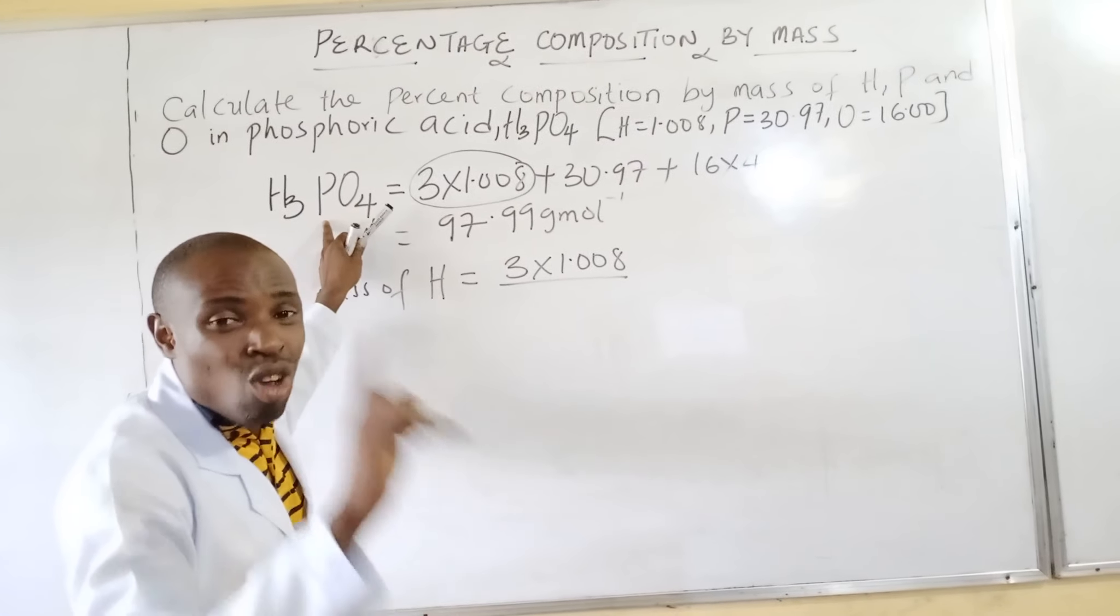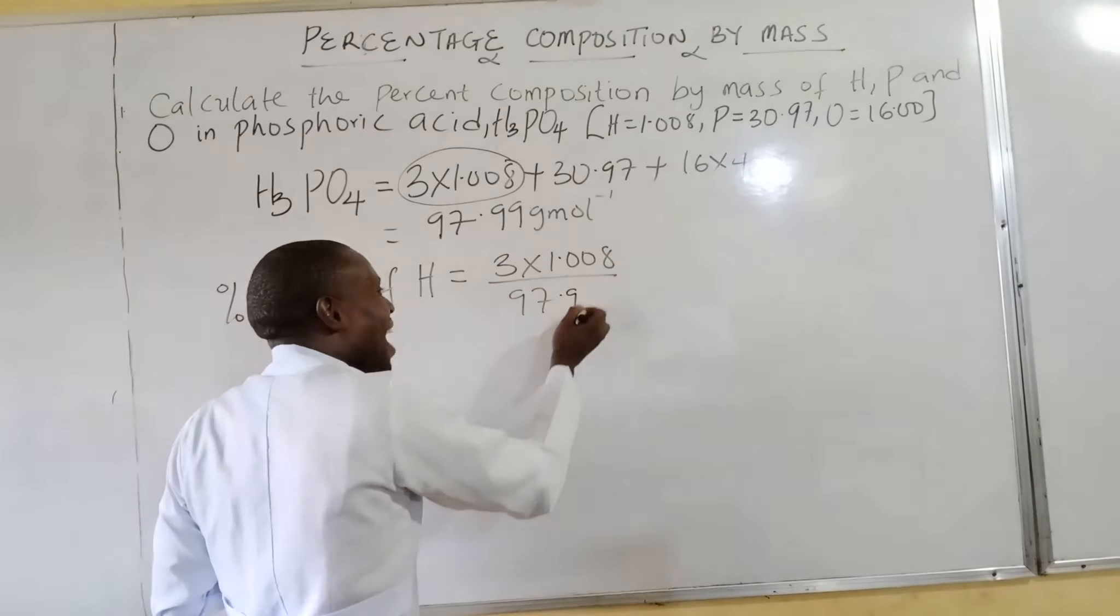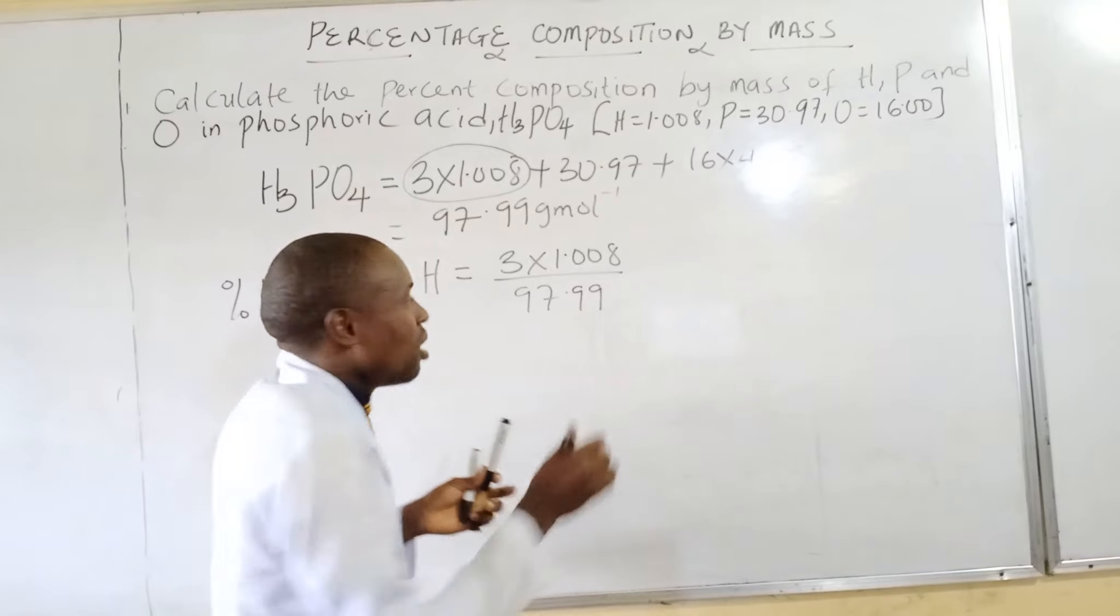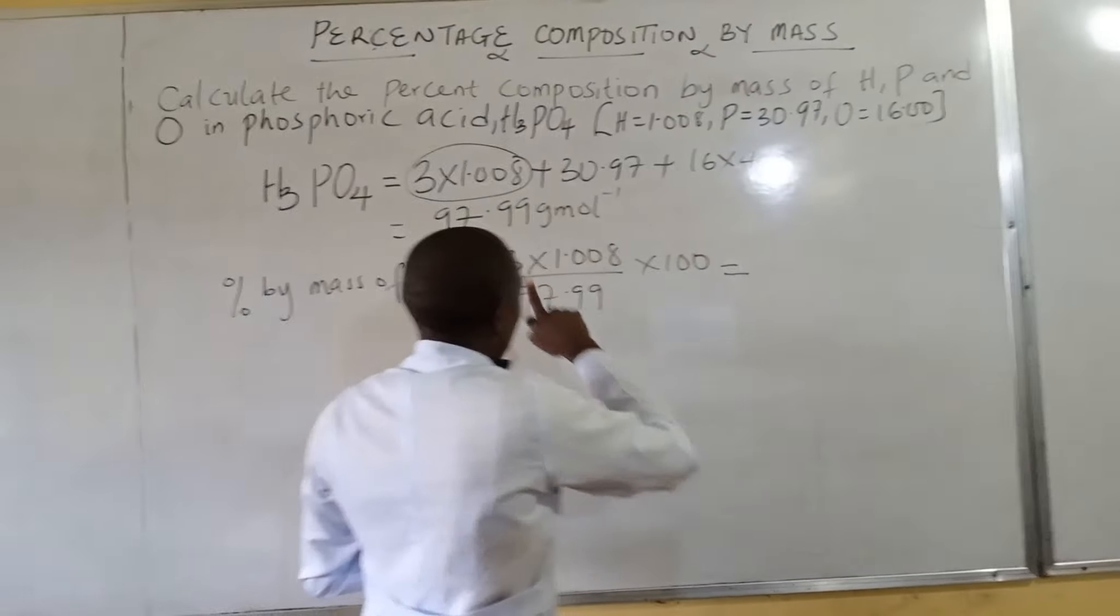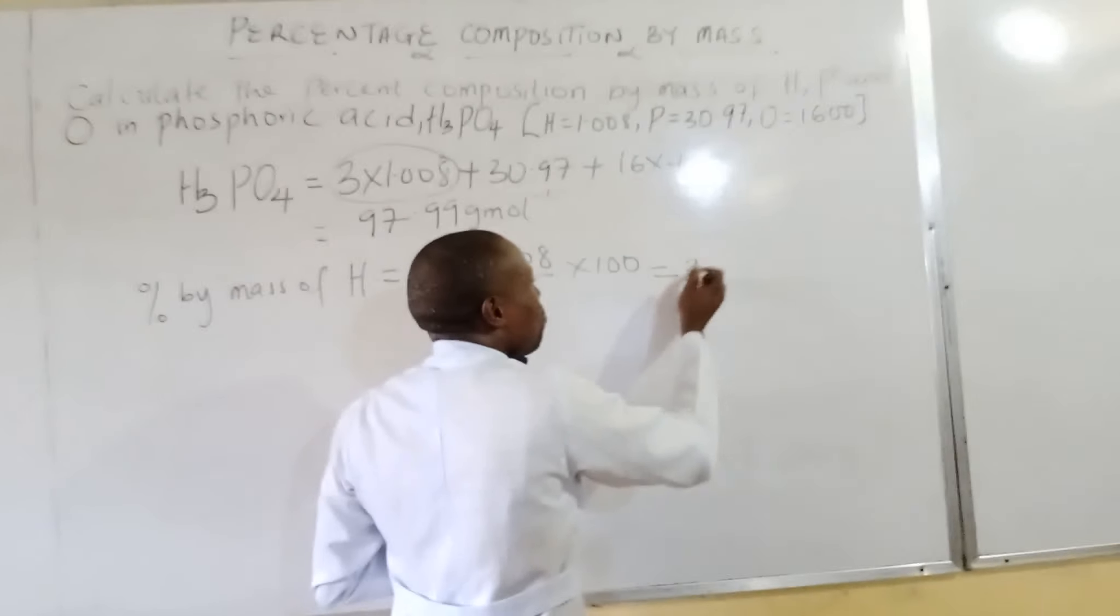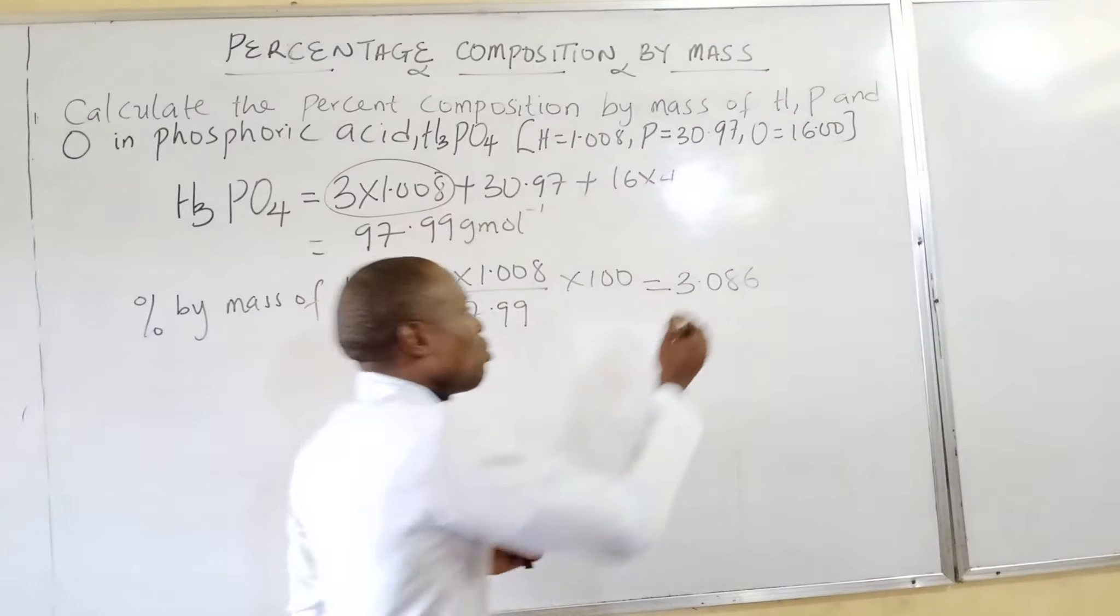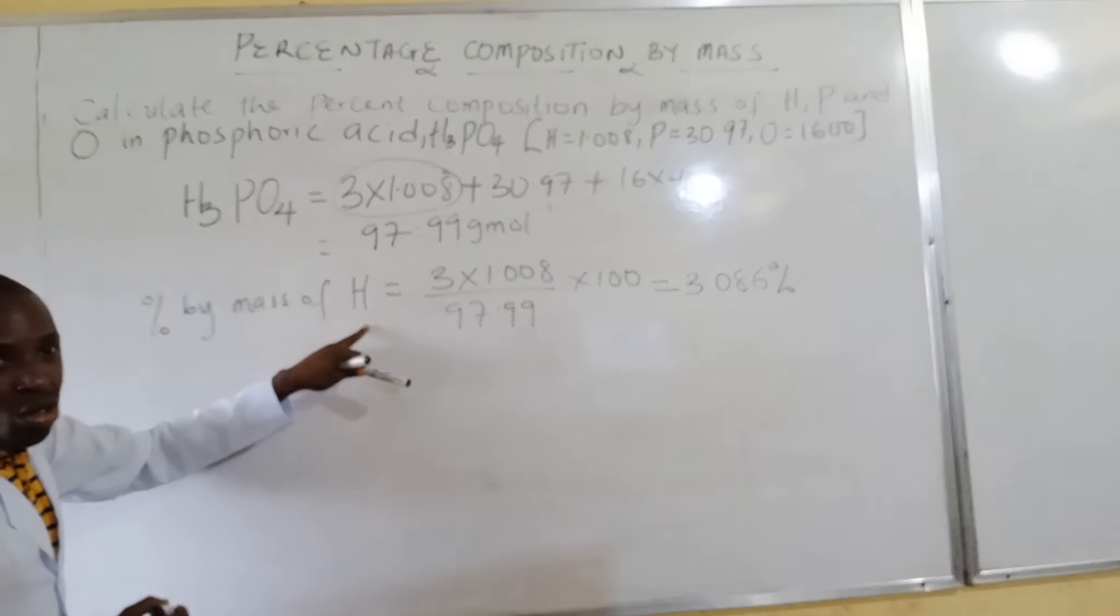Remember, it's percent, so we multiply by 100. This gives me 3.086, or 3.0861 percent. That is the percentage by mass of hydrogen.